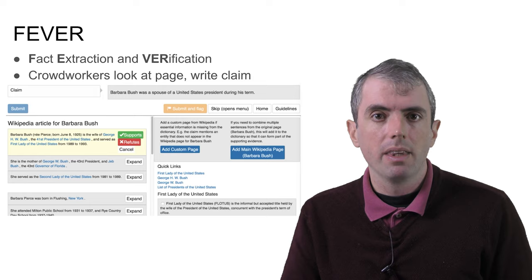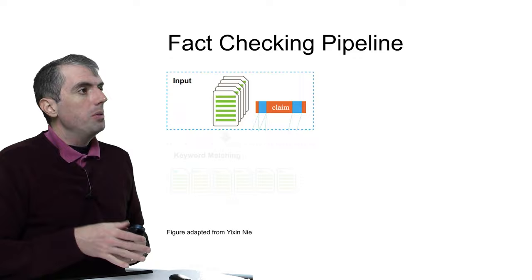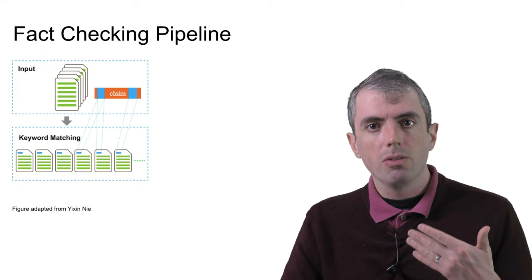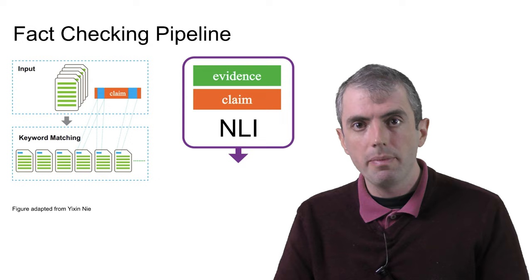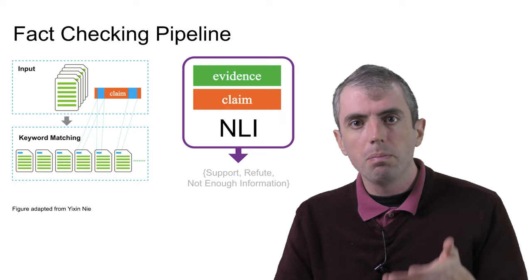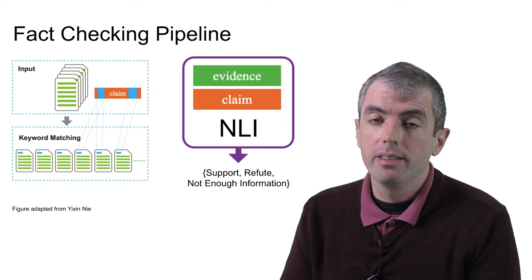The pipeline that has developed for this task works as follows. You get a claim in, you try to find passages that are relevant in a trusted source of information, like Wikipedia, for instance. You can use DPR or TFIDF to find relevant documents, and then those documents become the premises for something that looks a lot like NLI. Pick the best evidence for the claim, feed it into the NLI techniques we talked about in the last video, and then output whether the claim is supported, refuted, or if there isn't enough information to decide one way or another.